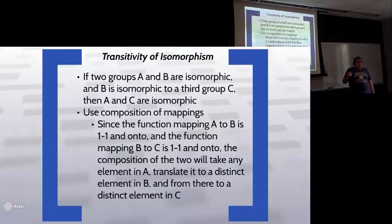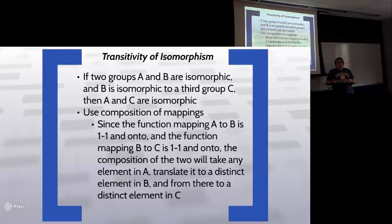Something else to note is that being isomorphic is transitive. If you have two groups A and B that are isomorphic, and groups B and C that are isomorphic, that means A and C are isomorphic. You can show this using composition of mappings. Since the function mapping A to B is one-to-one and onto, and the function mapping B to C is one-to-one and onto, combining the mappings gives you a mapping that takes any element in A, translates it to an element of B and then to an element of C in a way that will reach every element in C and no two elements in A will reach the same element.